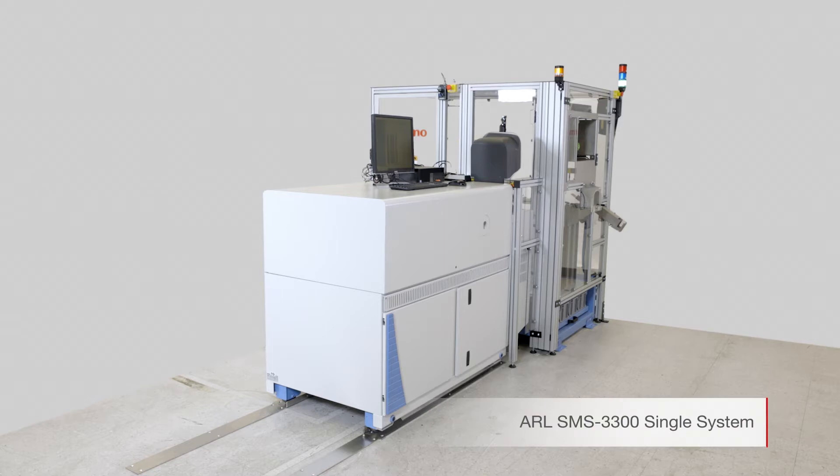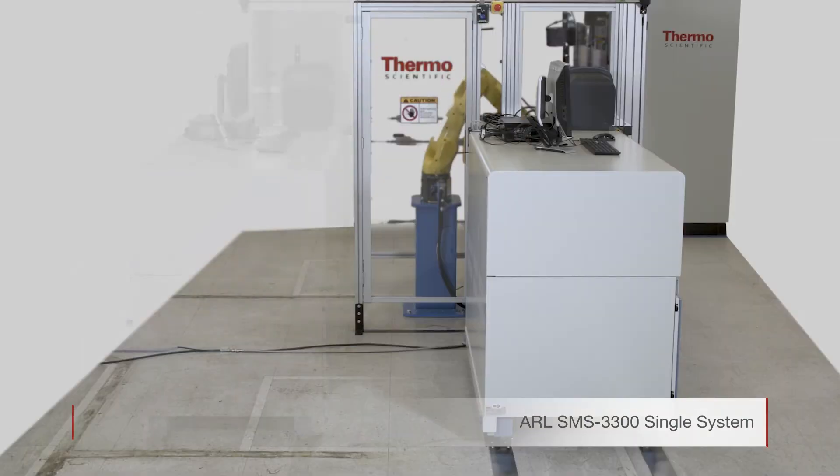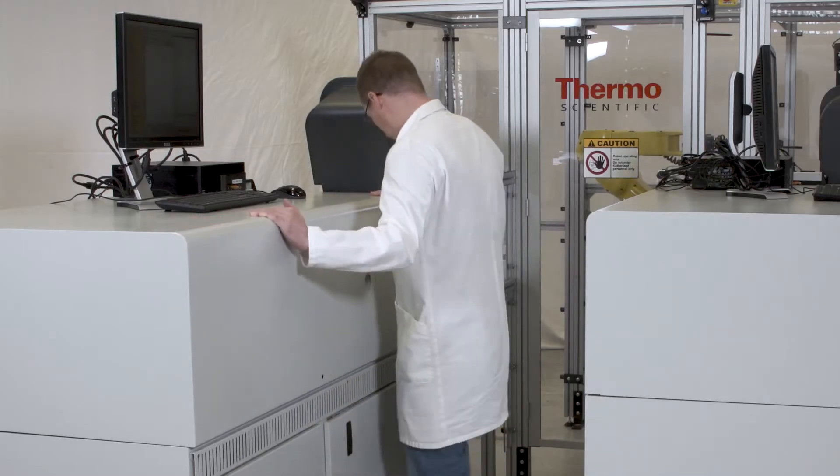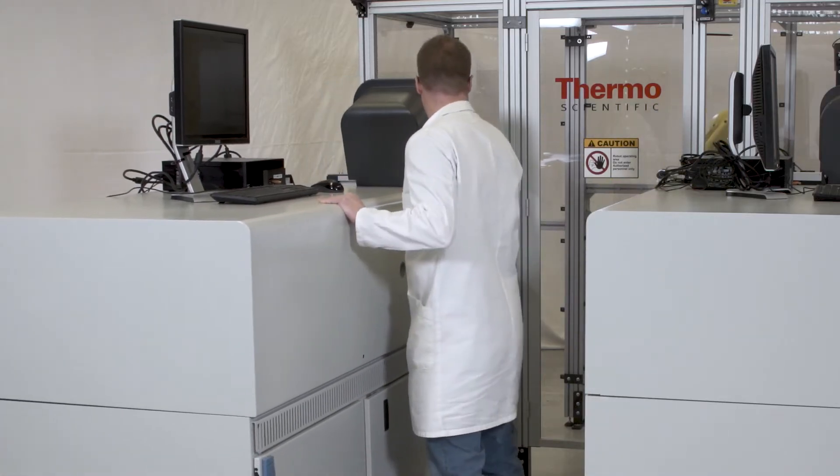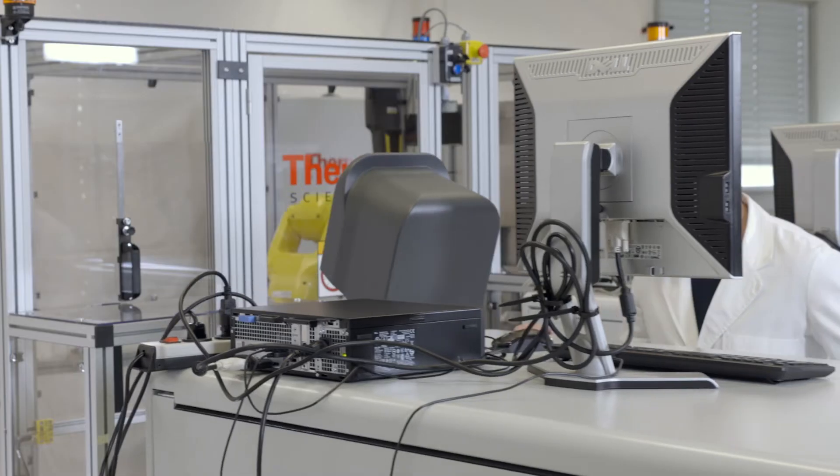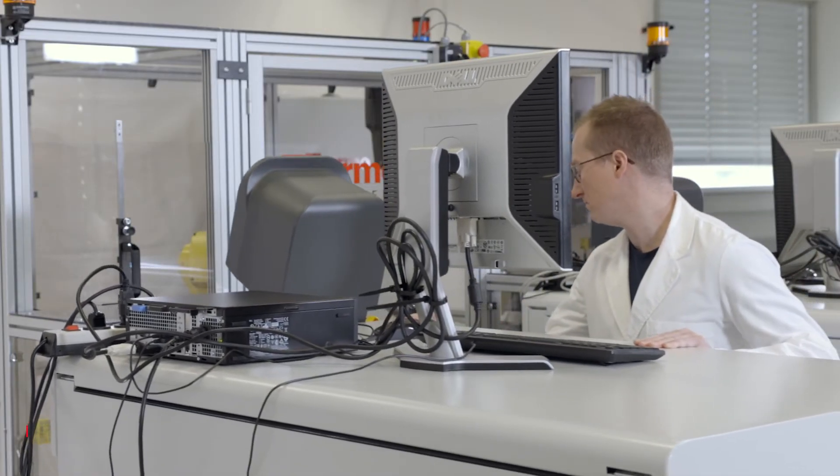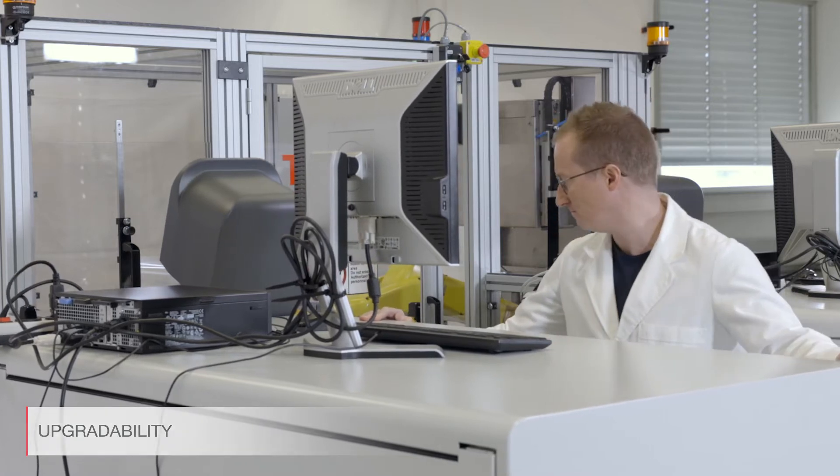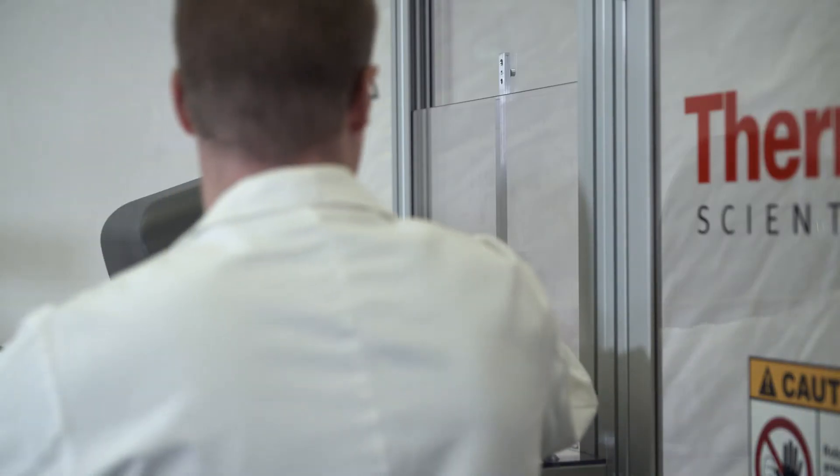This system can be configured with a preparation machine and one or two optical emission or x-ray fluorescence spectrometers. Thanks to its modular design, the ARL-SMS3300 single instrument can be easily upgraded into an ARL-SMS3300 dual instrument with low impact on existing equipment and no waste.